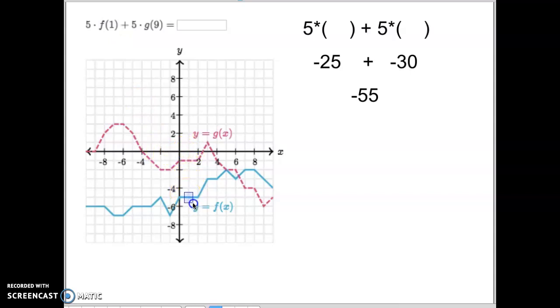Well, the y coordinate right here for this point would be right here at about negative 5. So I will plug in negative 5 right there. And what is the g coordinate when x is 9? Well, when x is 9 all the way over here, the g coordinate is this spot right here. And that spot right there is negative 6. So we look for what's the y coordinate when g equals 9. So we have negative 6 right there. 5 times negative 5 is negative 25. 5 times negative 6 is negative 30. Negative 25 plus negative 30 is negative 55. So our answer for this one is negative 55.